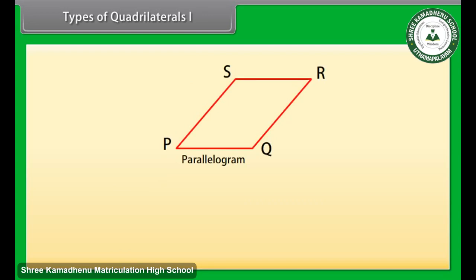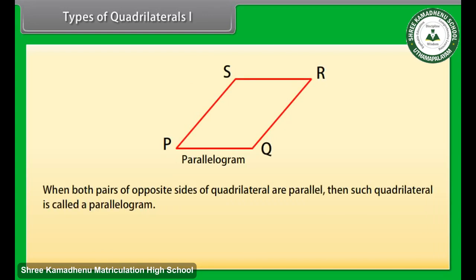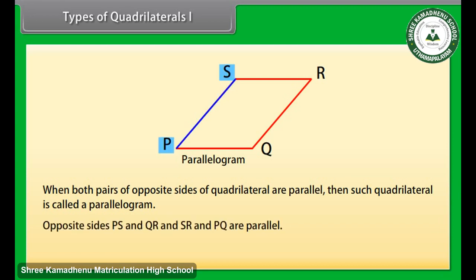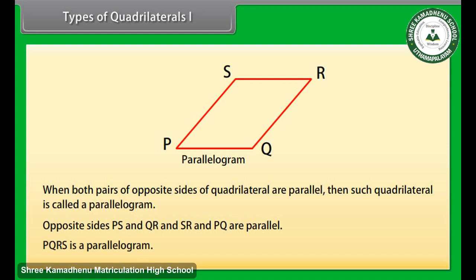Next is parallelogram. When both pairs of opposite sides of a quadrilateral are parallel, then such a quadrilateral is called a parallelogram. Here opposite sides PS and QR, and SR and PQ are parallel. So PQRS is a parallelogram.